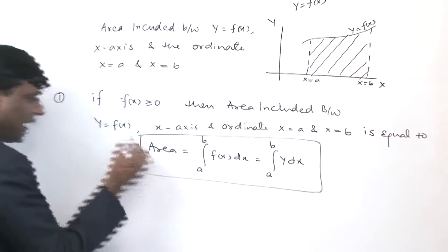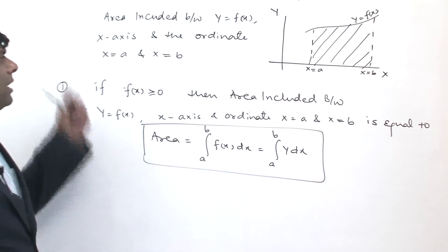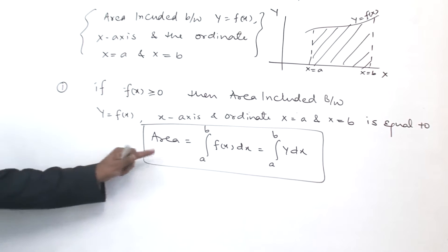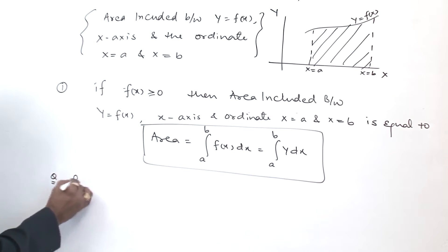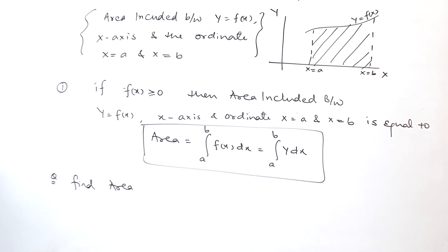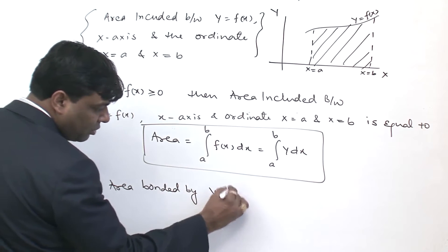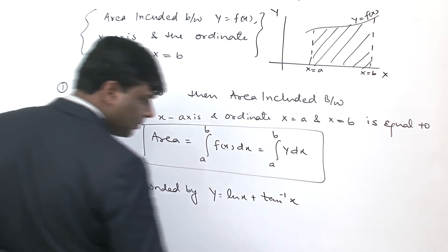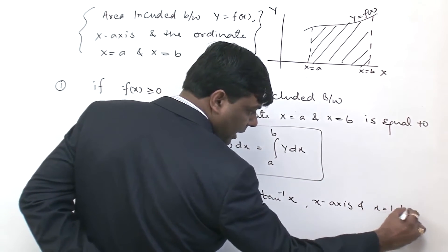This is the case. If f(x) is negative, then the area is handled differently. Basically, here we have to see the curve according to the positive area included between y = f(x), x-axis and the ordinate x = a and x = b. If we see in general case, it will become the first case. For example: Find area bounded by y = ln(x) + tan⁻¹(x), x-axis, and x = 1 and x = 2.